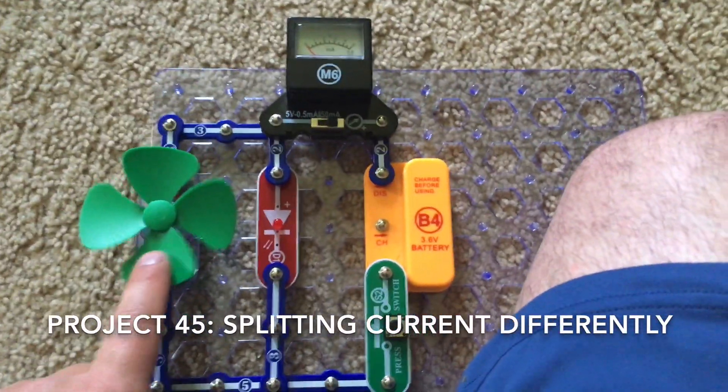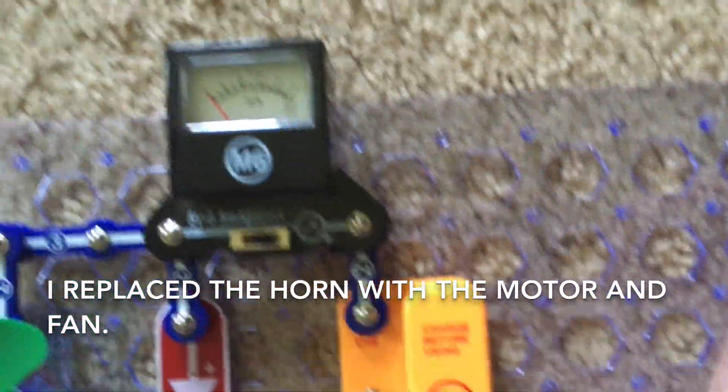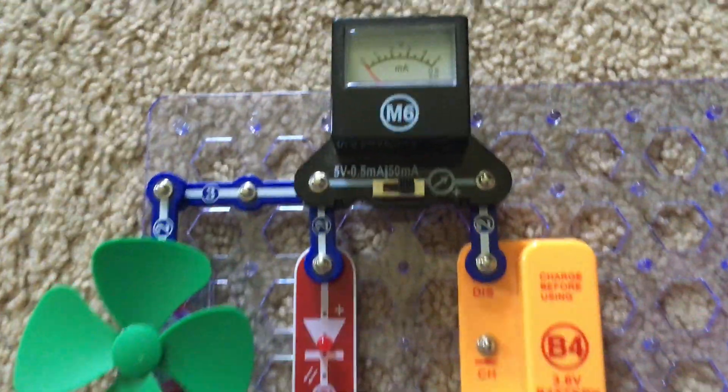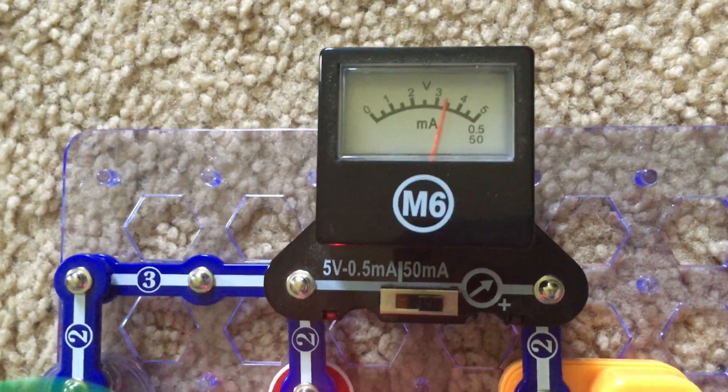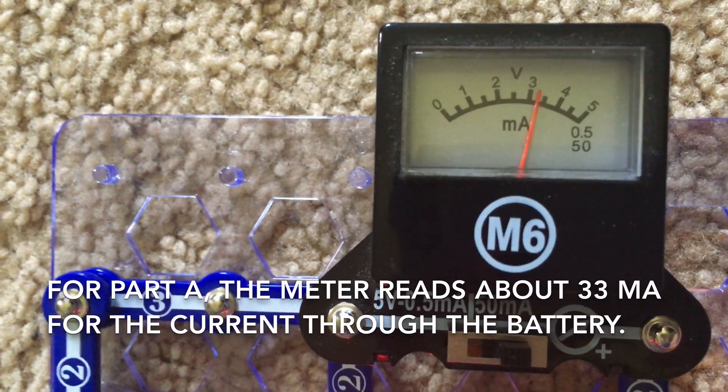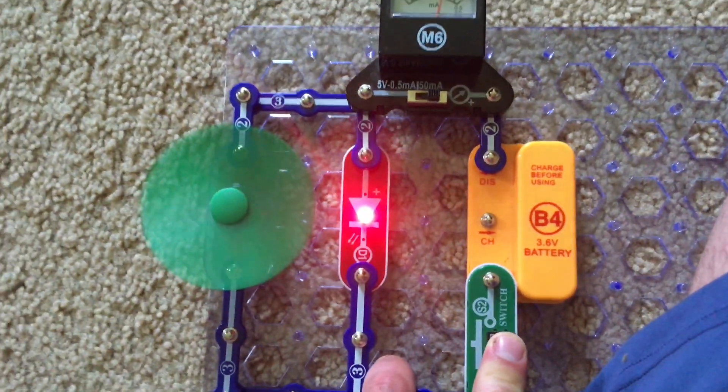I replaced the horn with the motor and fan and I'm going to say what the meter will measure now. For part A, the meter measures about 33 milliamps for the battery, for the current running through the battery.